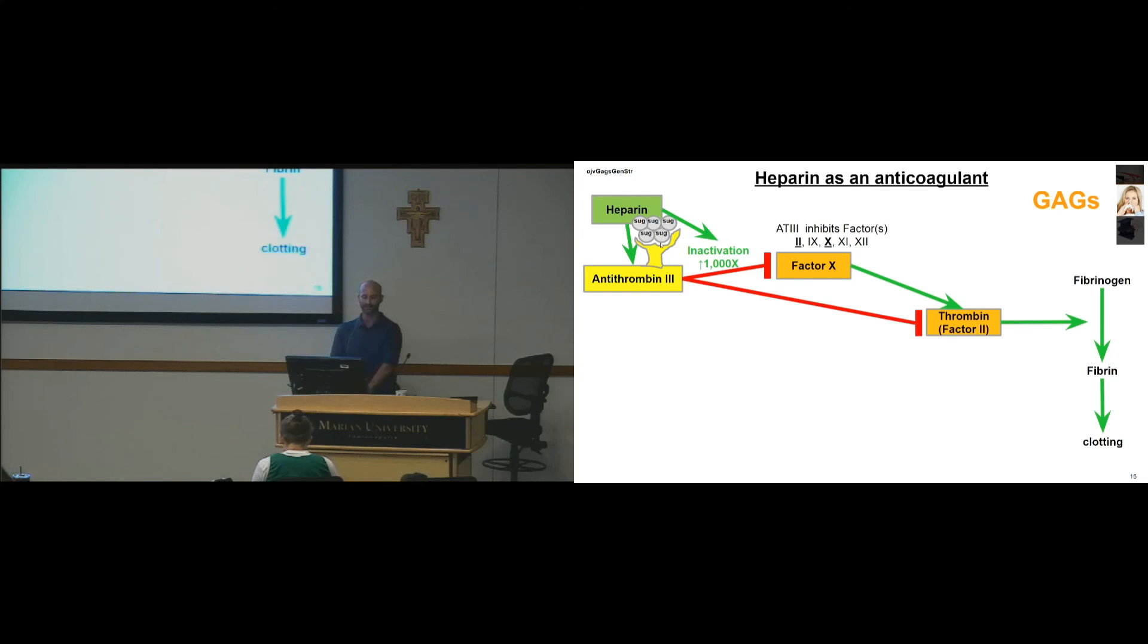If this sugar is not here, then the protein structure of antithrombin 3 doesn't have the hook to bind. It's binding onto that carbohydrate section.